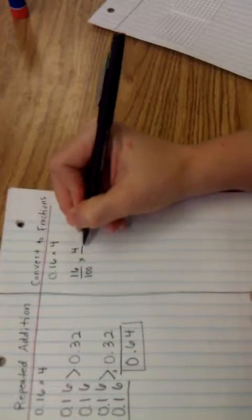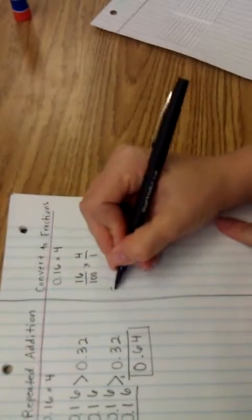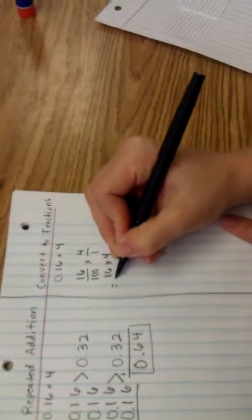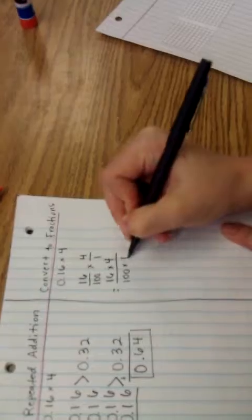4 as a fraction is 4 whole. So now I can multiply straight across. So I have 16 times 4 and I have 100 times 1.